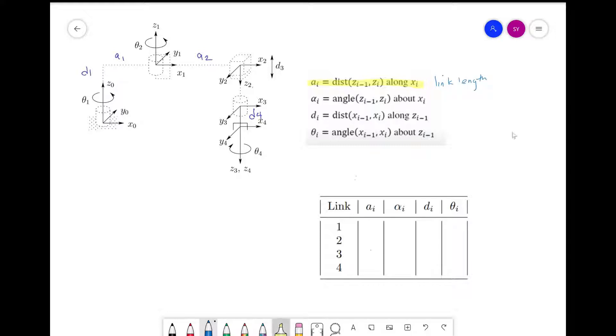Next is alpha_i, the angle between z_{i-1} to z_i about x_i. This is also referred to as the link twist.